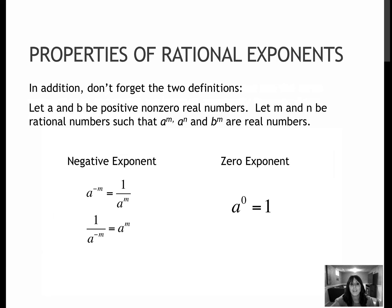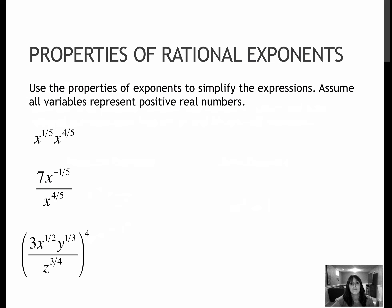In addition, we did have negative exponents, which made whatever our value was a denominator, or if it was in the denominator, we turned it into a numerator. And then zero exponent means anything to the zero power is one. So this is really just some practice for us of all of those things involving some rational exponents.